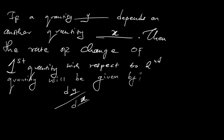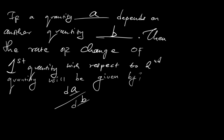It's not always the case that you find y and x as the variables in question. At times you might find different variables. If a quantity w depends on another quantity v, then the rate of change will be dw/dv. You might also have random variables like a and b, giving da/db. In most cases y and x are used, which is why we use dy/dx.